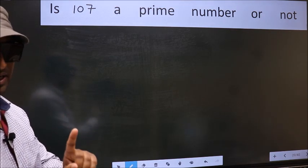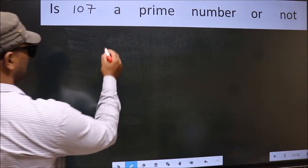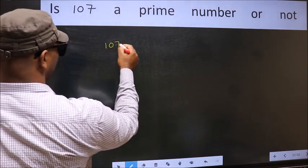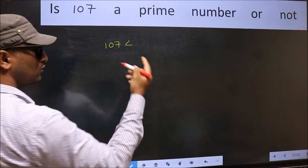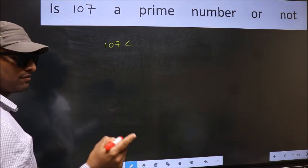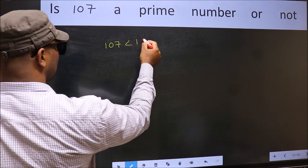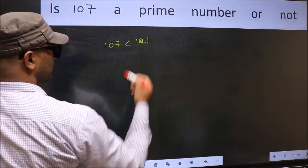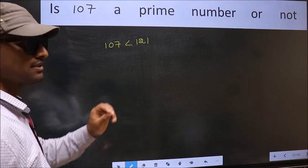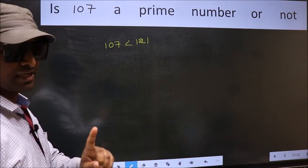for that, step 1. Given number is 107. This is close to which perfect square number? This is close to 121, a perfect square number. This is your step 1.